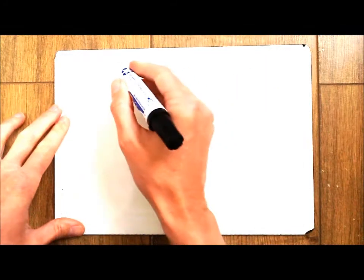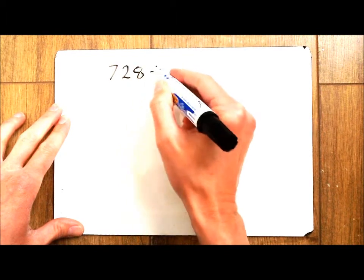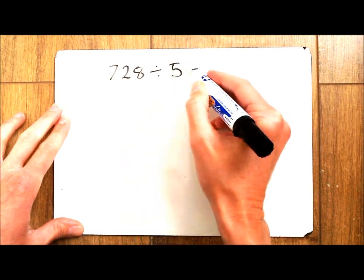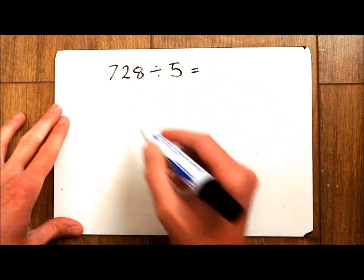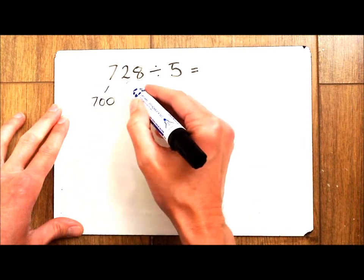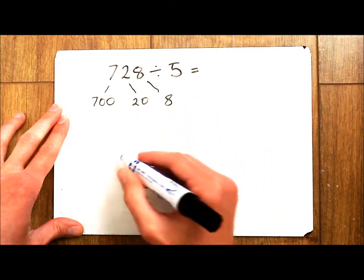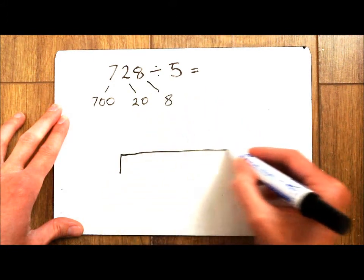So here's my sum. 728 divided by 5. The first thing to do is to partition your number. So I've got 728 and that will help me when I put it into my bus stop.